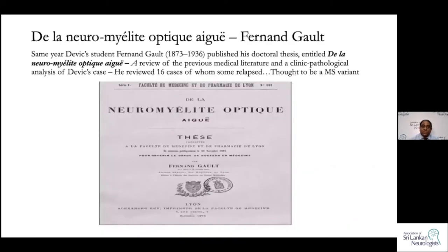Devic's PhD student, in his thesis, went on to write about 16 similar cases existing at that same time in 1894. He found out that some of those patients were actually relapsing. Devic's original patient had died after a few months, so he had thought it was a monophasic illness. Gahl, the student, thought that perhaps they were a variant of multiple sclerosis.